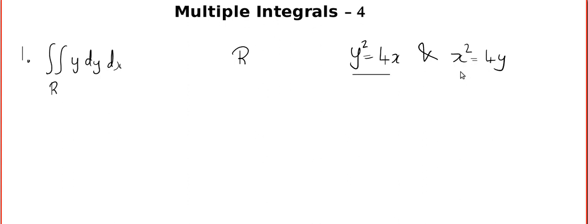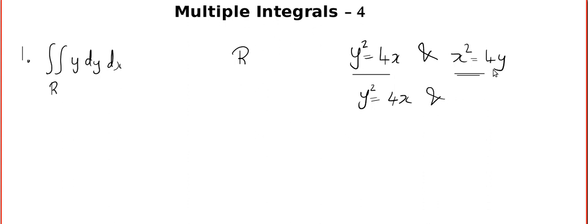We discussed these kinds of problems in the last video. Whenever you are given two curves and asked for the area between them, the first thing to do is find the points of intersection. From the first equation, we have y² = 4x, and I'm going to eliminate y by finding the y value from the second equation.